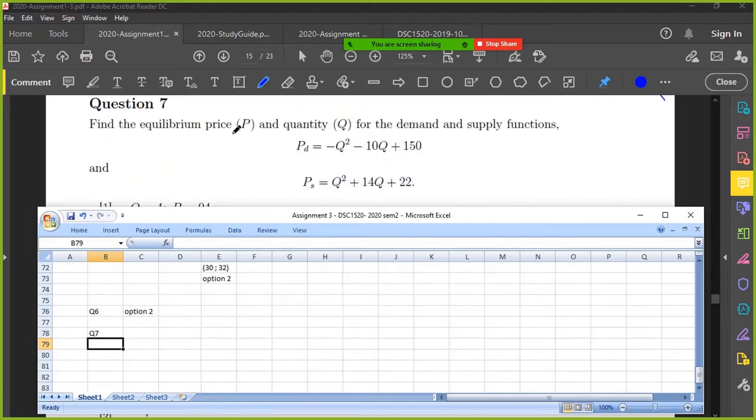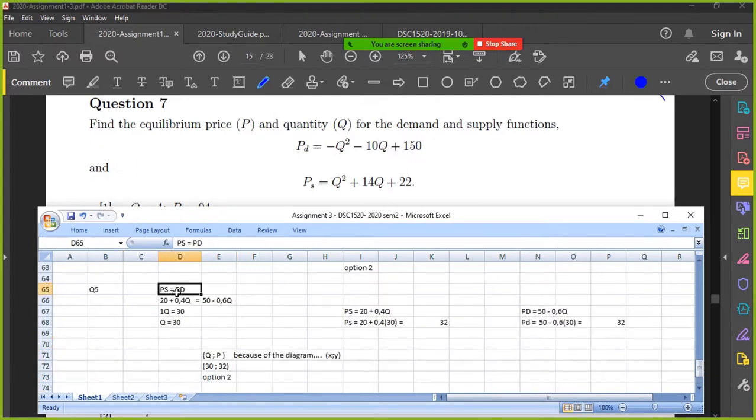Question 7 is, find the equilibrium for the demand and supply functions. Okay, that's easy. Same as before. Copy this, paste.